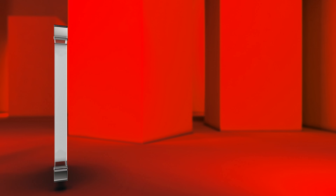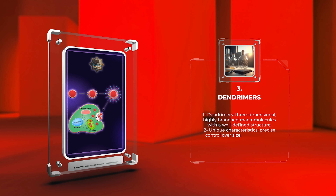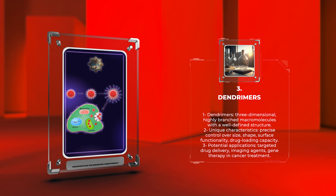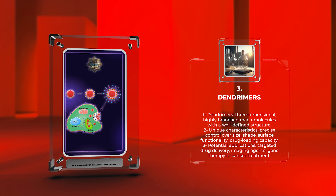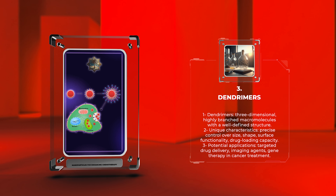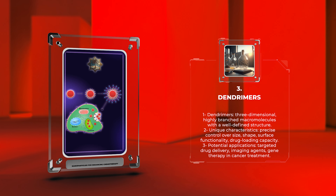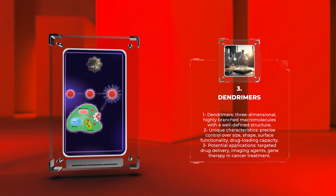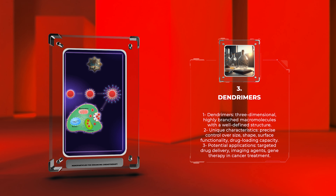Dendrimers are three-dimensional, highly branched macromolecules with a well-defined structure. They possess a central core, interior layers, branches, and outer surface. Dendrimers enable precise control over size, shape, surface functionality, and drug loading capacity. Their unique characteristics offer potential for targeted drug delivery, imaging agents, and gene therapy and cancer treatment.